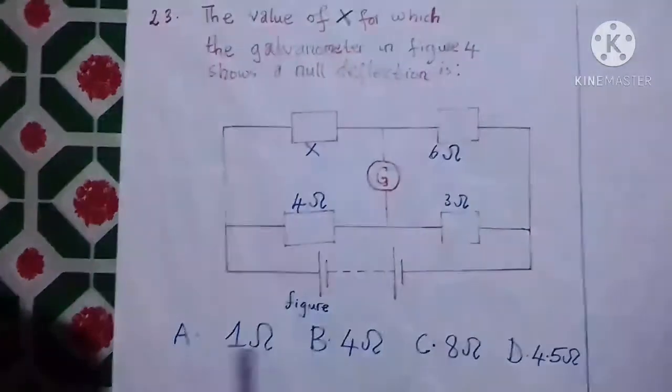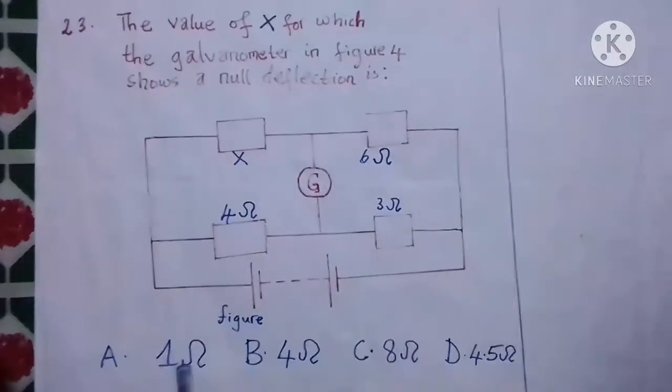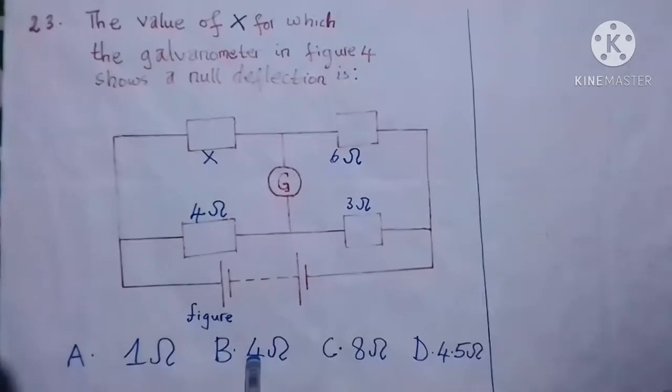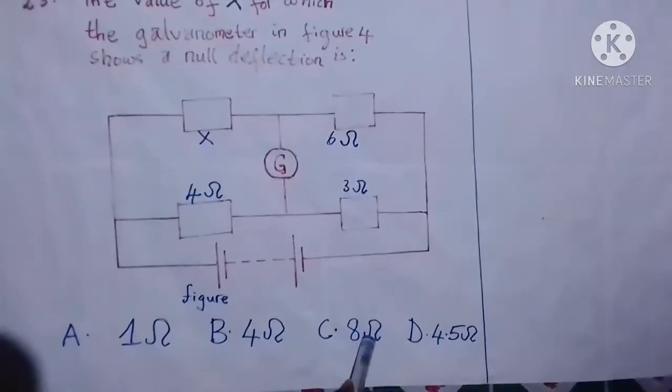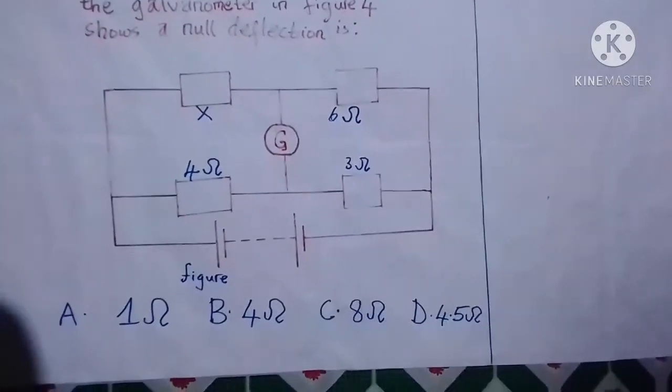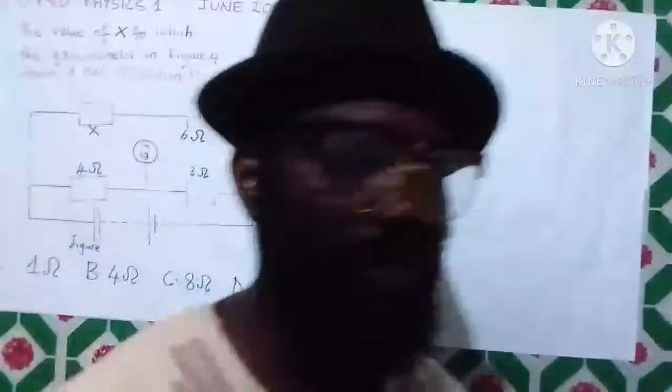If capital X is: A, 1 ohm; B, 4 ohms; C, 8 ohms; and D, 4.5 ohms. Okay, let's have the solution of this problem.